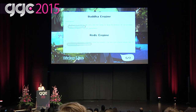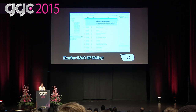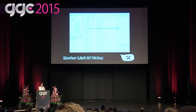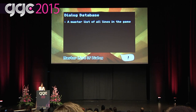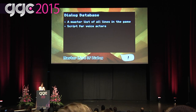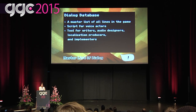Note the line code — it maps to the physical data of a line like the text and the sound file. We have an offline tool that interfaces with our dialogue database, which contains all the information about each individual line in all languages it's been translated into. It's used for generating scripts to give to voice actors when we record lines, and it's a tool for our writers, audio designers, localization producers, and implementers. Our database is organized based on game structure.